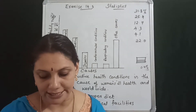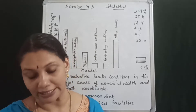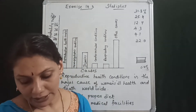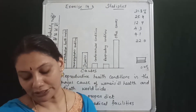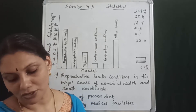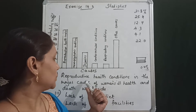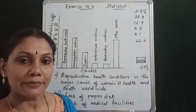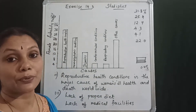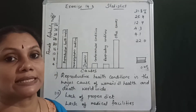Second and third questions: Try to find out, with the help of your teacher, any two factors which play a major role in the cause of women's health issues. Two major causes are: lack of proper diet, and lack of medical facilities.